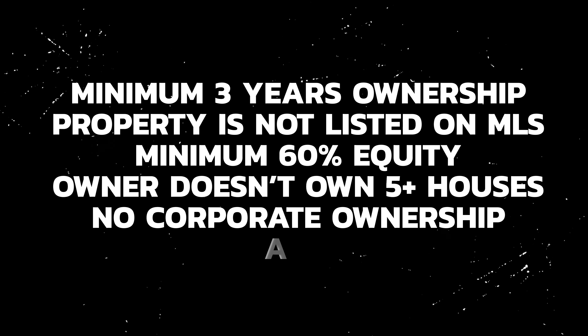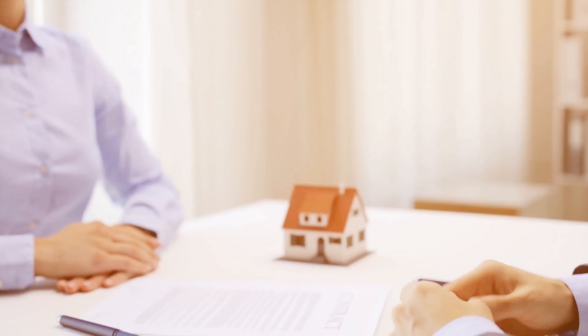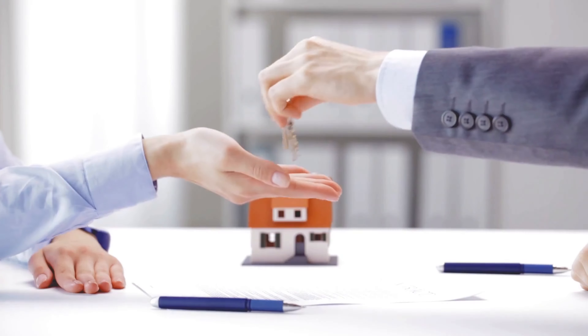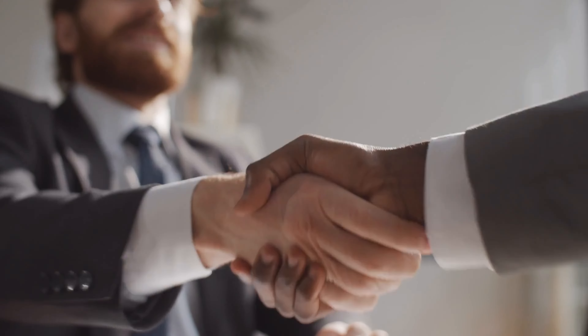We also want to make sure the owner doesn't own more than five houses and there's no corporate ownership. If a person has owned a house for less than three years, most likely it won't be a good wholesaling deal. MLS-listed properties are just trash leads. We go for 60% equity — not 55% — because the more equity means more deals. The chance of getting a deal with someone who owns more than five houses is very low; you're wasting your time compared to targeting people who own fewer.